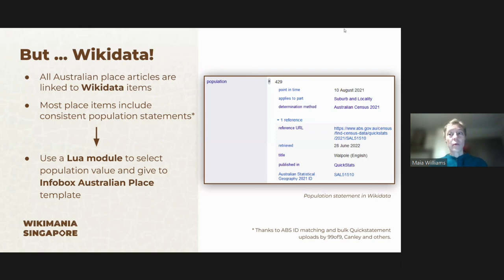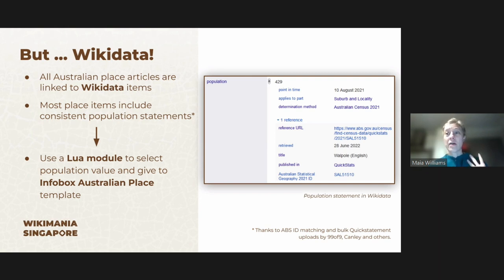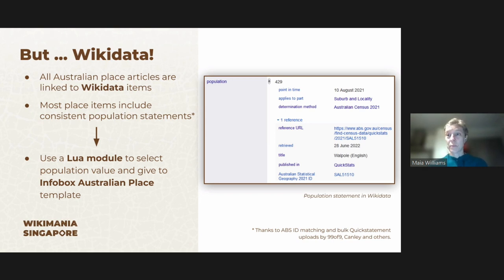We figured that we could make use of Wikidata to semi-automate this process. This is possible because all the Australian place articles are linked to their equivalent Wikidata items, and a couple of users have done a huge amount of work adding population values and statements to these items and developing bulk upload methods. So there is a huge amount of really good population data in these place items. What we needed to do was write a new module that could grab these population values and the reference data and give it to the infobox Australian place template.